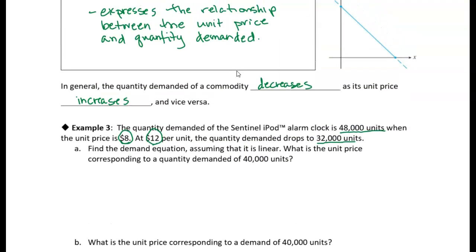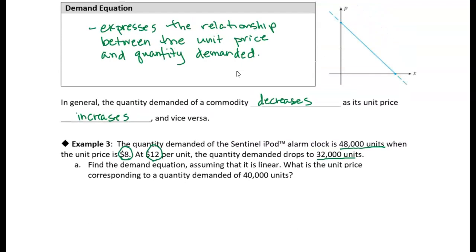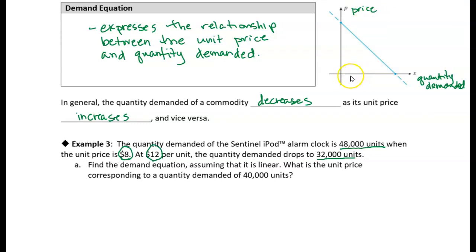One thing to note is the orientation of the axes in the demand curve. X is the quantity demanded, and P is the price on the vertical axis. This seems a little backwards because normally you'd want the independent variable on the x-axis and the dependent variable on the y-axis. In this case, demand is dependent on price, but that's just how economists do it. So just be aware: x is quantity demanded, and P is the y-axis.